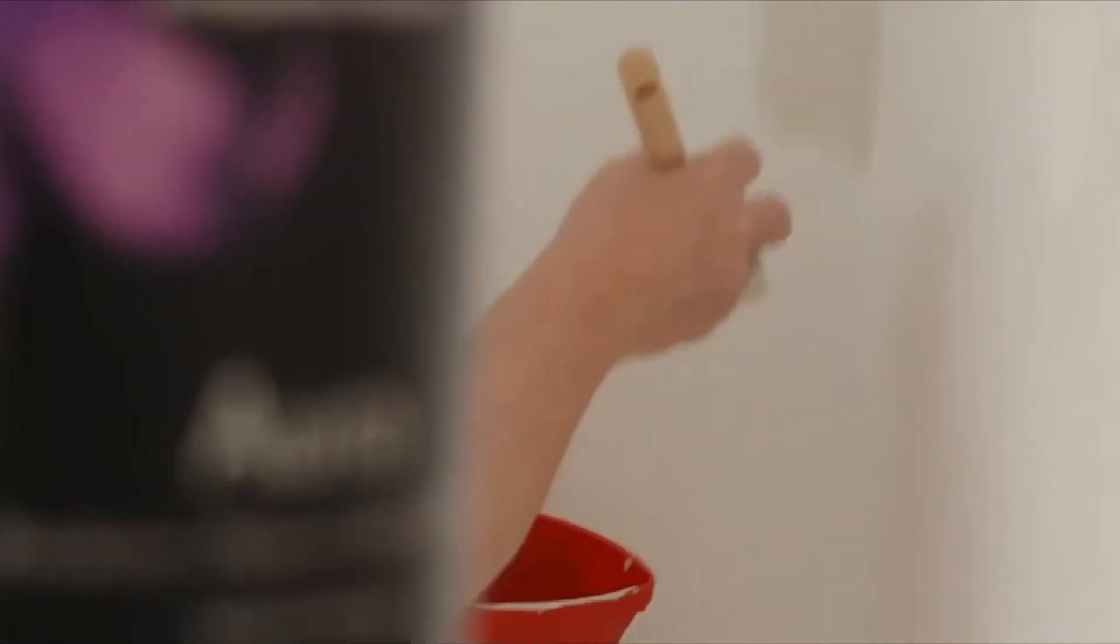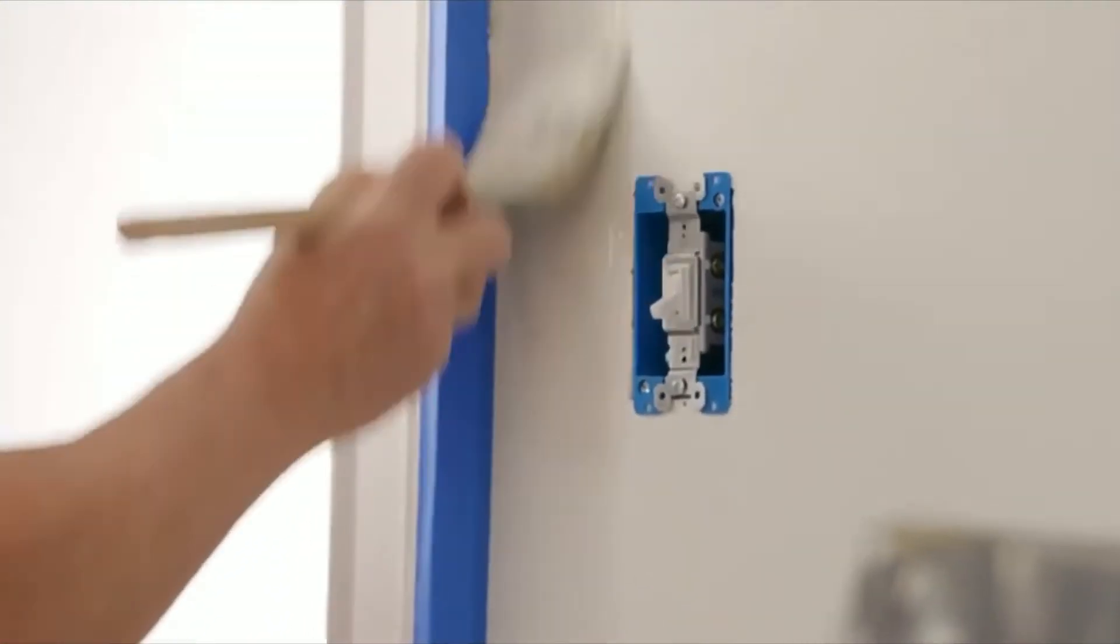Follow the same process in the corners and paint about three to five inches on each side. Do the same around any windows, doors, and finally the baseboard.